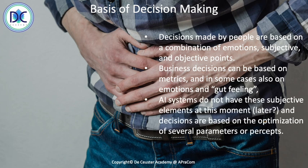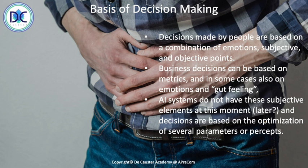AI applications and agents don't have these subjective elements, at least not at this moment. Perhaps in the future they may have more subjective ways to make decisions, but currently they don't. Decisions by those agents are based on an optimization of several parameters or concepts: what do we observe, what are the elements known from before, what is the knowledge available, and how will we use all these parameters to make a specific decision?